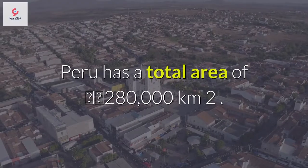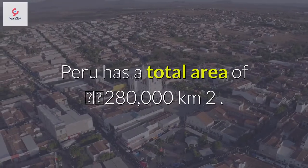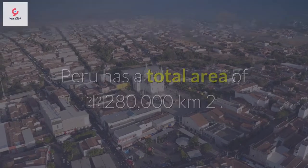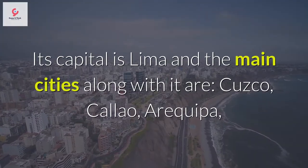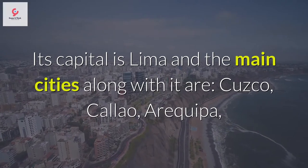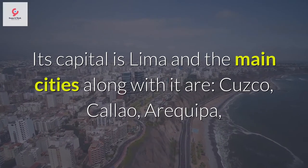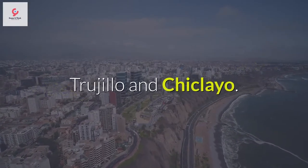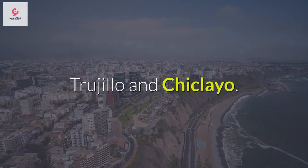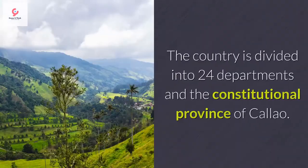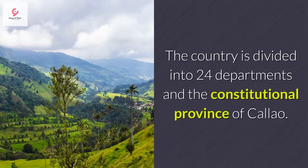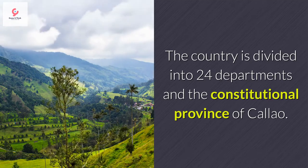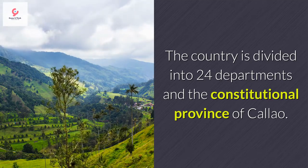Peru has a total area of 1,280,000 square kilometers. Its capital is Lima and the main cities along with it are Cuzco, Callao, Arequipa, Trujillo, and Chiclayo. The country is divided into 24 departments and the constitutional province of Callao.